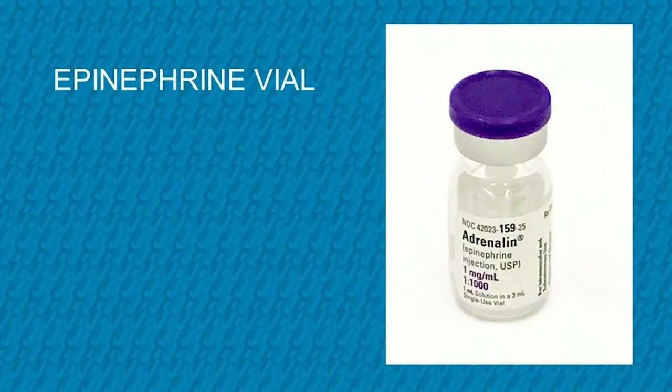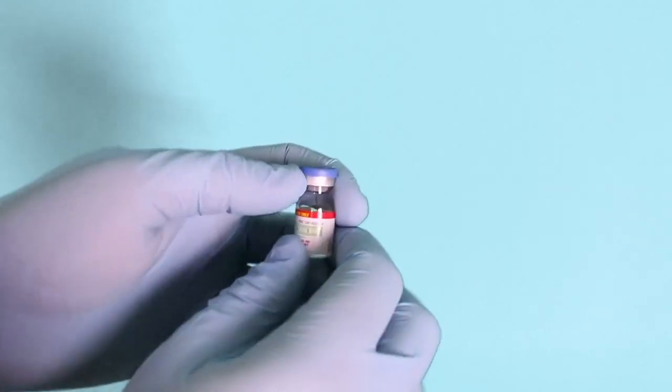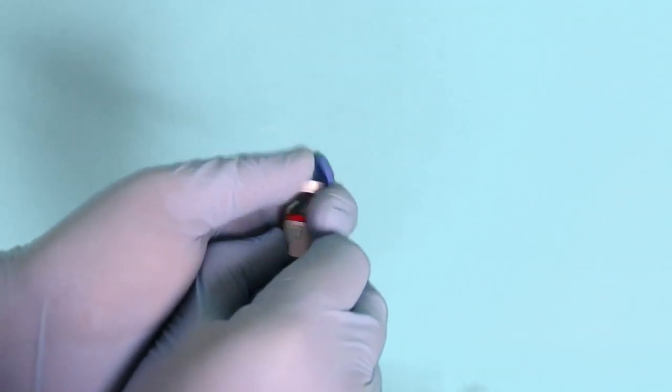First let's talk about the epinephrine vial. The epinephrine 1-1000 1mg 1ml vial is covered with a plastic dust cover that must be removed prior to inserting a needle. The first step will be to remove it like so.